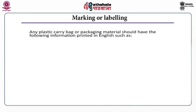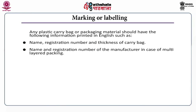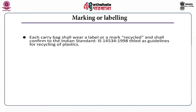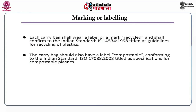Regarding marking or labeling: any plastic carry bag or packaging material should have the following information printed in English — name, registration number and thickness of the carry bag; name and registration of the manufacturer in case of multi-layered packaging; and name and certificate number in case of carry bags made from compostable plastic. Each carry bag should bear a label or mark 'Recycled' conforming to IS 14534-1998, and also a label 'Compostable' conforming to IS 17088-2008 titled as 'Specification for Compostable Plastics.'